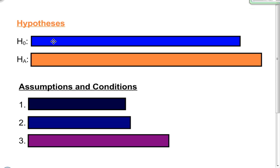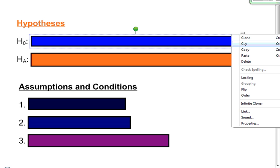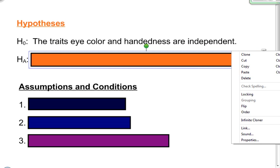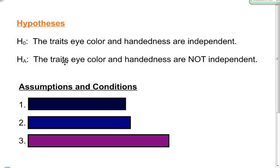The first thing I want to do is write my hypotheses. My null hypothesis for a test for independence is: the traits eye color and handedness are independent. For any kind of test for independence, your null hypothesis is going to say that your two variables are independent of each other. Consequently, the alternative hypothesis will say that the traits eye color and handedness are not independent. So your null says the two variables are independent and your alternative says they are not independent.